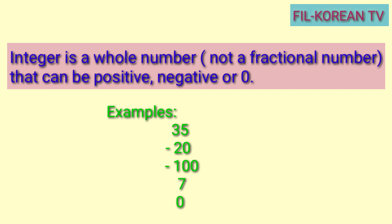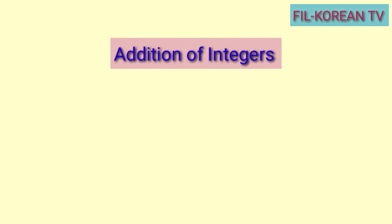Just keep in mind that integers are all counting numbers — 1, 2, 3, 4, 5, and so on — and also the negative counting numbers — negative 1, negative 2, negative 3, and so on — as well as zero.